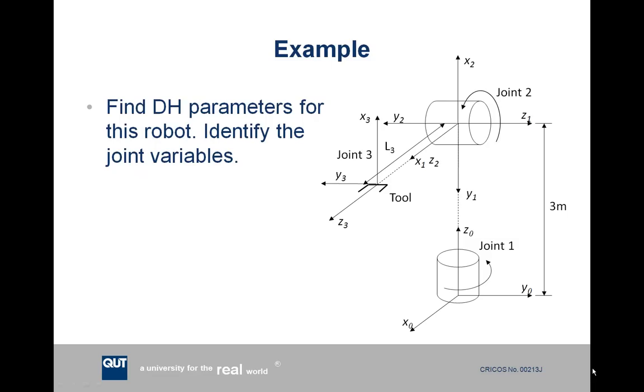We've assigned the three z-axes first. z0 is the axis of revolution around joint one, z1 is the axis of revolution around joint two, and z2 is the axis of translation, or the prismatic axis, of joint three.